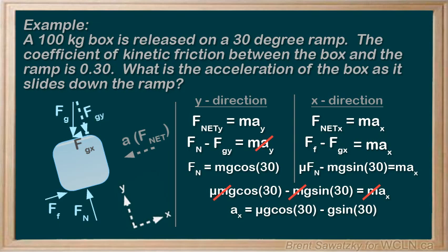At 30 degrees, and with μ being 0.30, the acceleration turns out to be negative 2.4 meters per second squared.